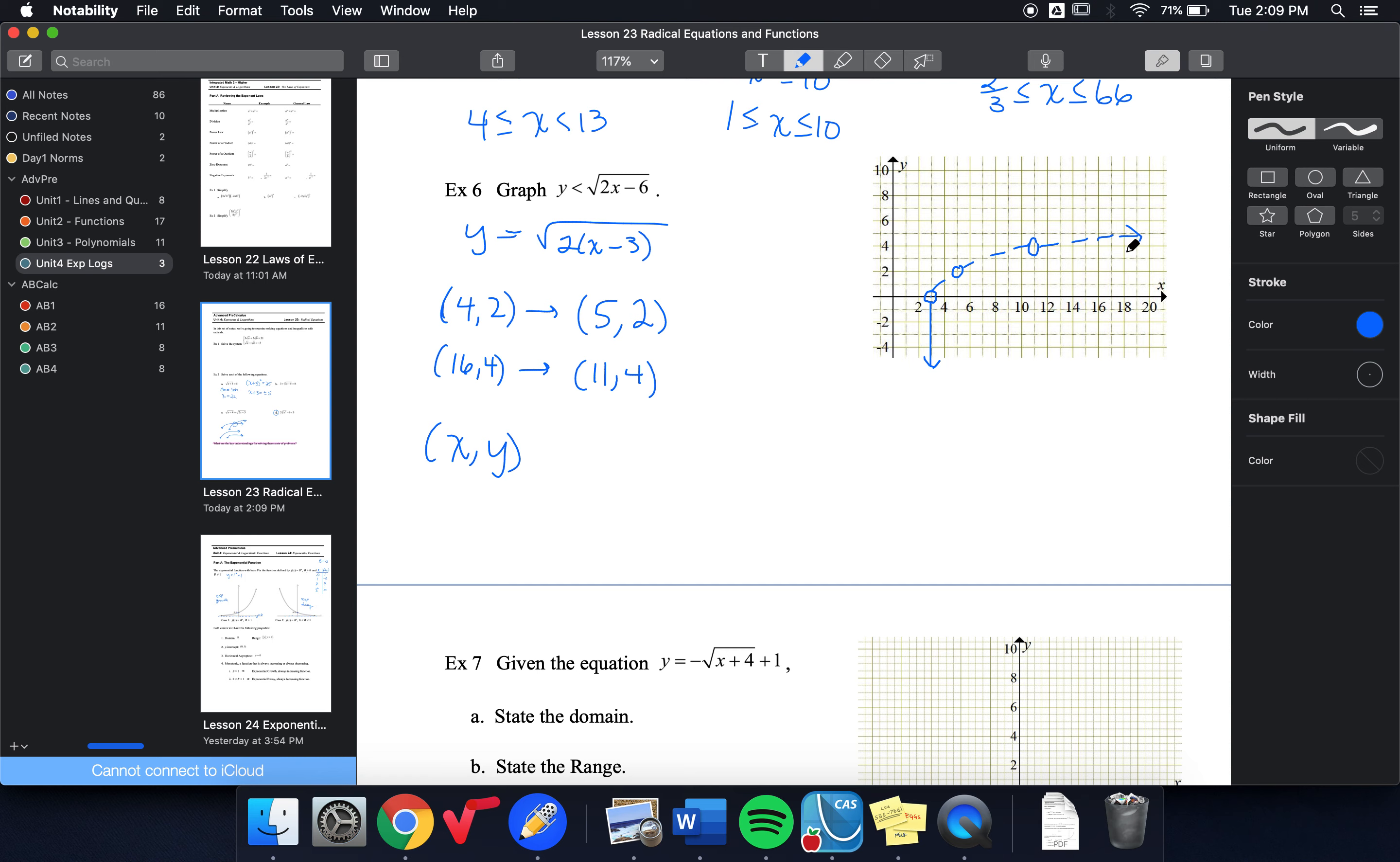Similarly, any point that is underneath my curve will also make that inequality true. So for example, if I pick the point here, for example, 5, 0. If I test that, so I'm wondering, does 5, 0 make the inequality true? I can say, is 0 less than the square root of 2 times 5 minus 6, and that's true. This is a positive value. Square root of a positive value is greater than 0. So I have a true statement for everything underneath here.